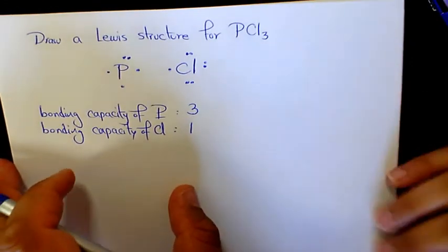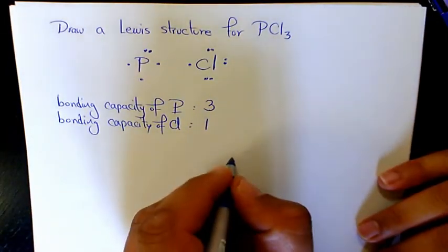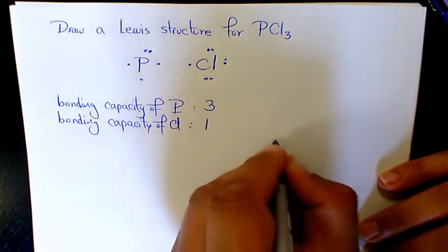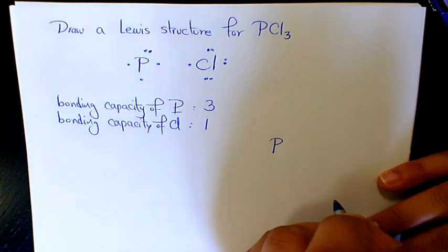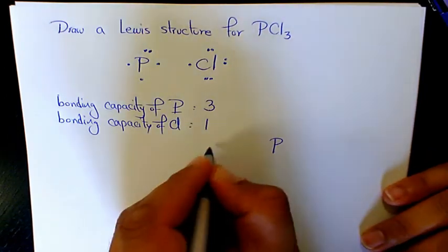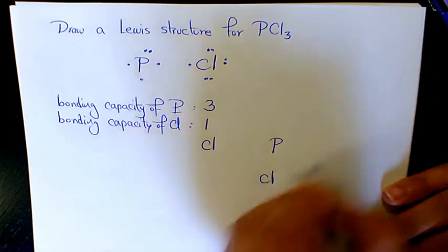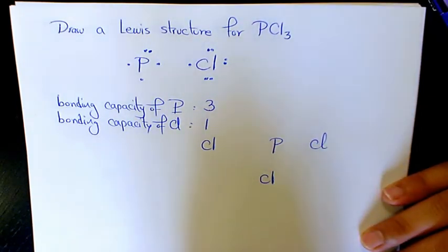So I'm going to write the symbol of the central atom P, and then arrange the symbols of the surrounding atoms — we are dealing with three chlorine atoms here.